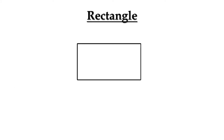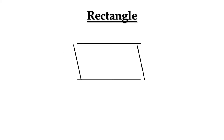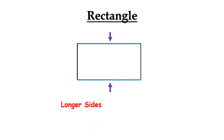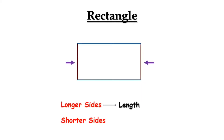Look at this figure — it is a rectangle. A rectangle has opposite sides equal and parallel. It has two longer sides, which are known as the length of the rectangle, and two shorter sides, which are known as the breadth of the rectangle. Let us consider the length as L and the breadth as B.